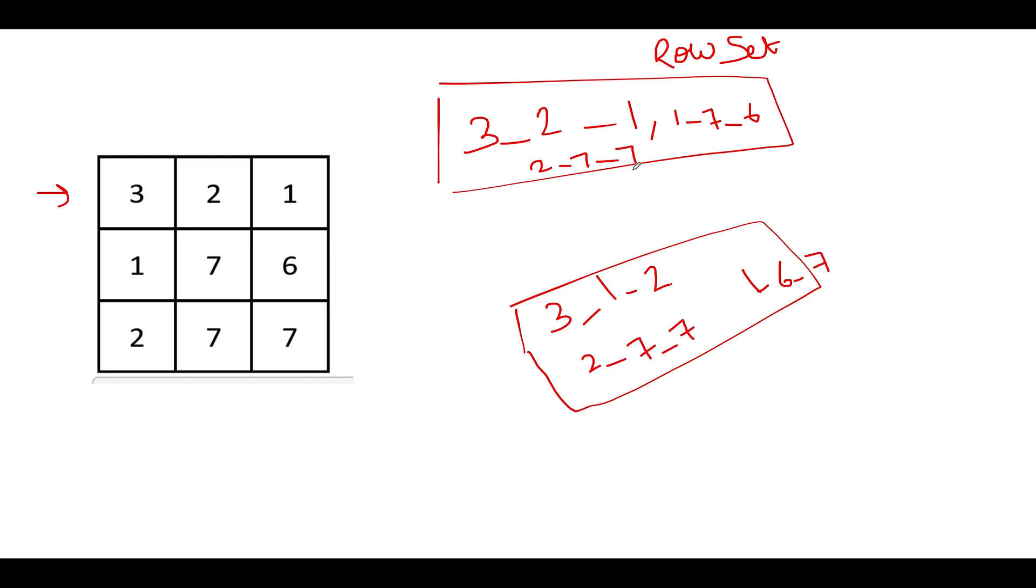Now what we can do, we can simply iterate over the entries that are present in our row set and check whether each of these entries is part of our column set or not. So the first entry is 321. Is it part of the column set? No, it's not part of the column set. Let's skip it. Next is 176. Is 176 part of this column set? No, it is not. So let's skip this.